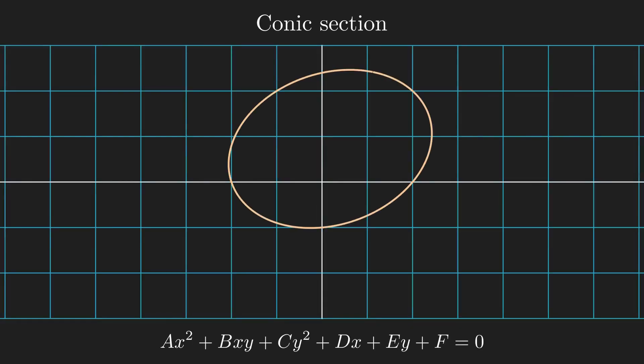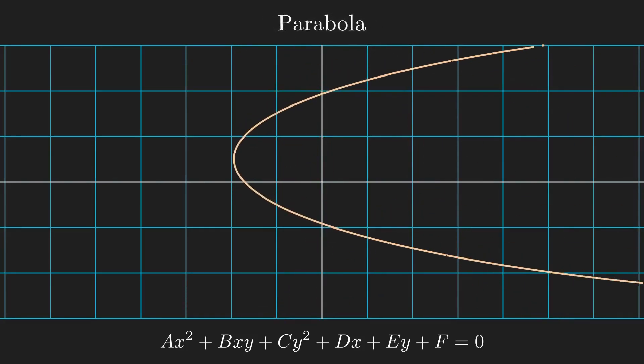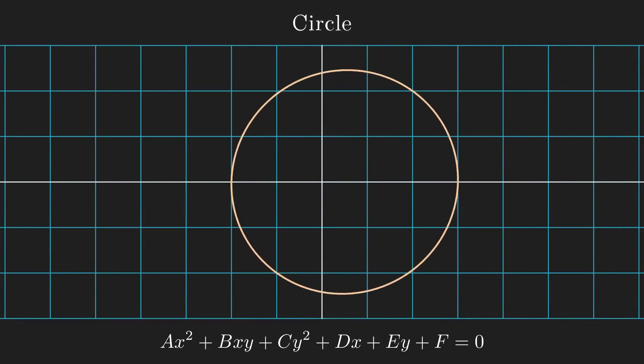A conic section is formed by graphing a quadratic polynomial of x and y equaling 0. It includes hyperbolas, parabolas, up to two lines, circles, single points, and ellipses.